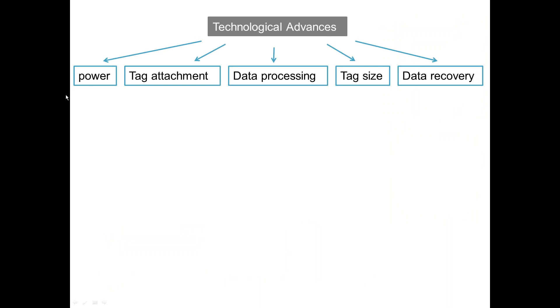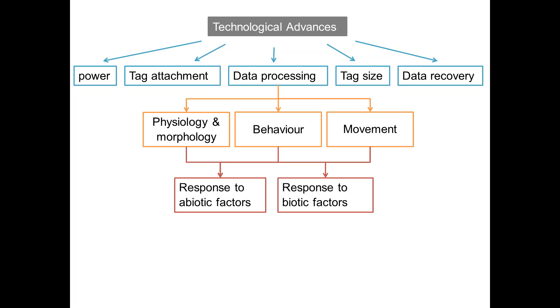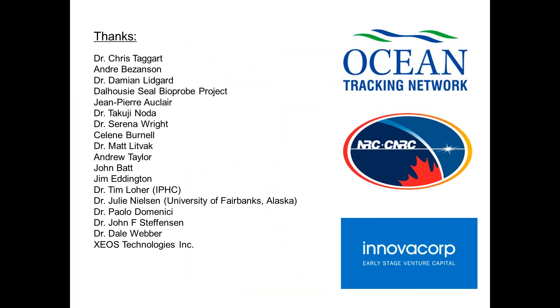To sum up: if we continue advancing this technology — improving battery power, tag attachment, data processing, reducing tag sizes, and finding better ways to recover datasets — we can develop a comprehensive picture of fish physiology, morphology, behavior, and movement, and start relating this to abiotic and biotic factors. This would give us insights into evolutionary processes, ecological processes, and conservation. That concludes my presentation. I'd like to thank everyone involved in this research and the funding agencies, and I'm happy to answer any questions.